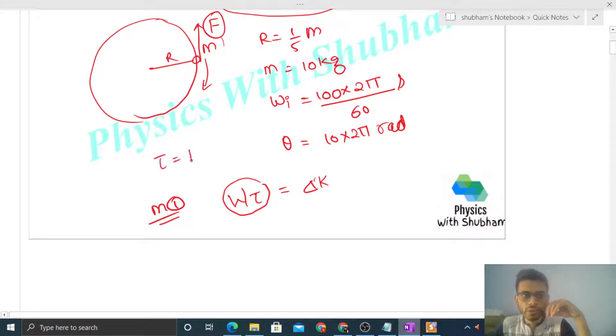This will be torque is equal to F into R because it acts tangentially. This is the value of torque. When the wheel rotates 20π radian, what will be the work done? That will be F into R times theta, that is 20π. So let's write it: theta. We'll put the values.